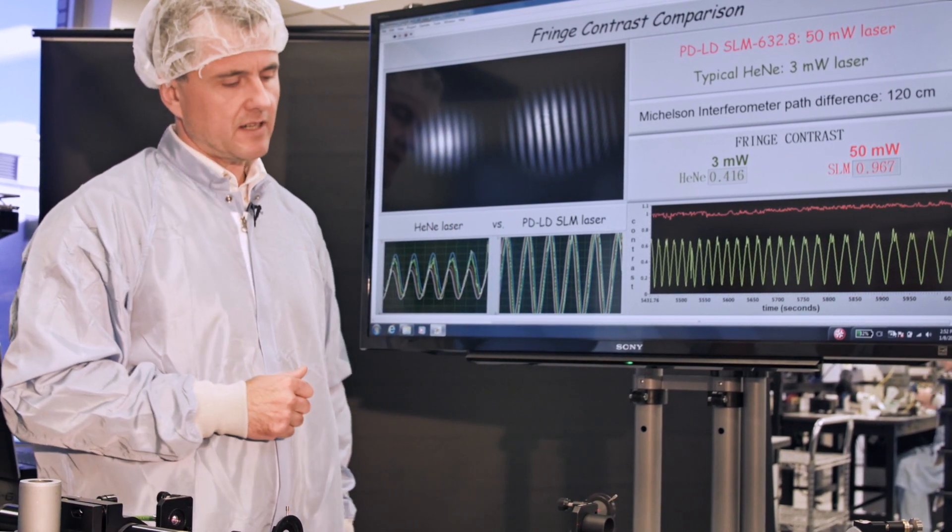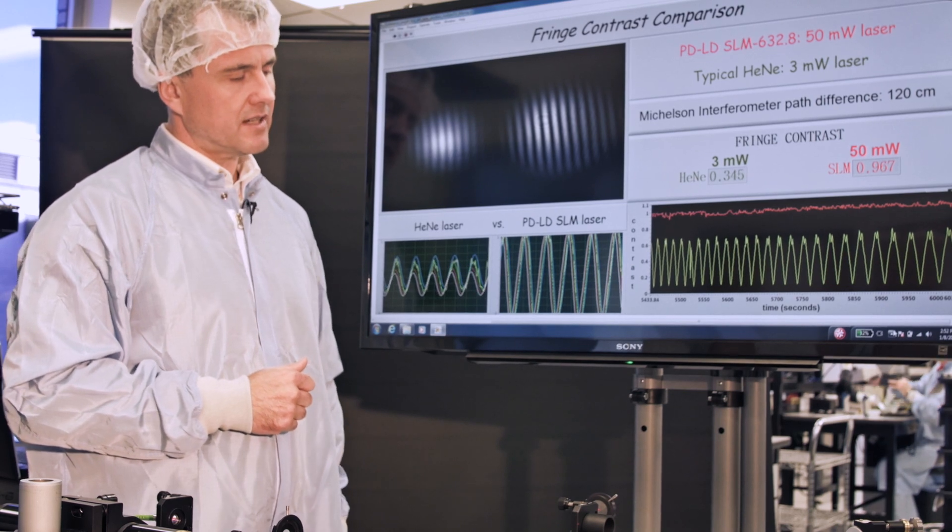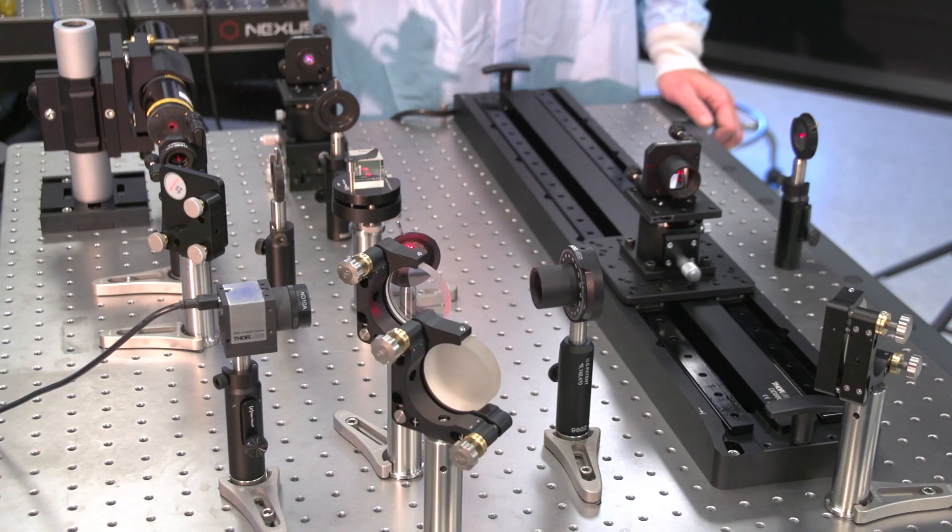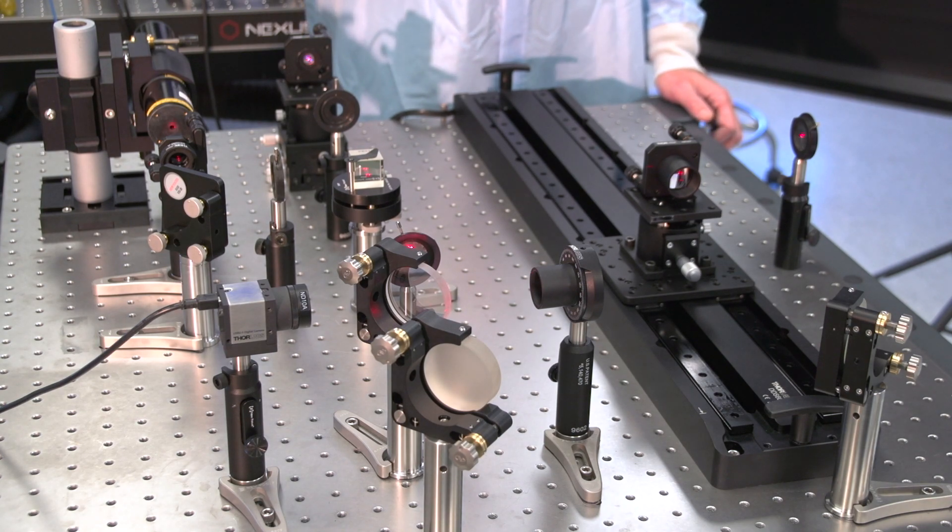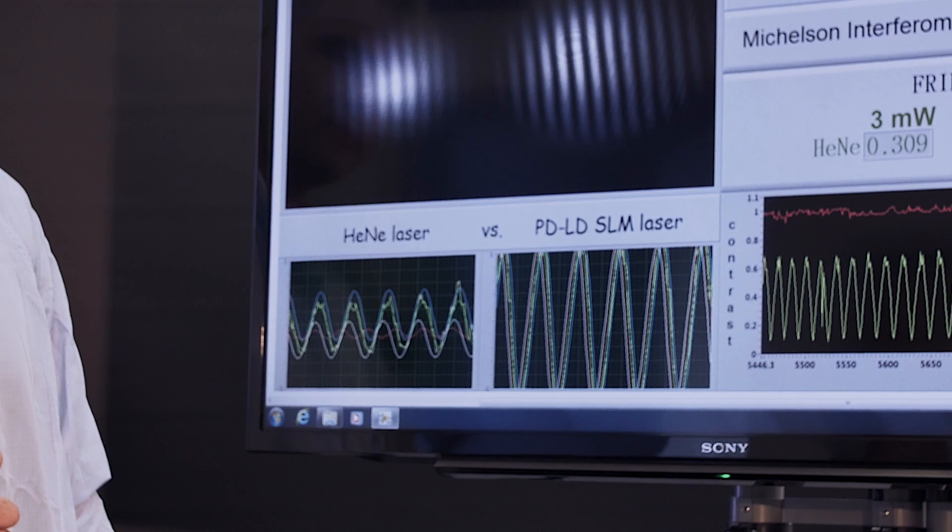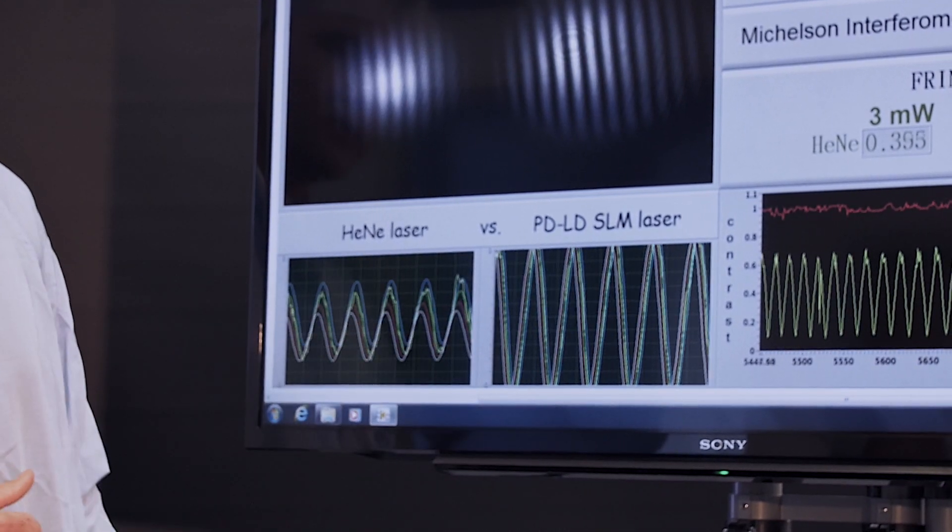whereas the fringe contrast of SLM series laser diode is nearly perfect. This parameter is calculated automatically using slices of this interference pattern which can be seen here on the screen.